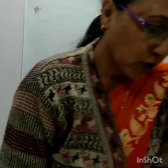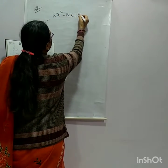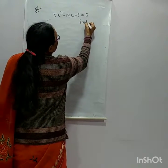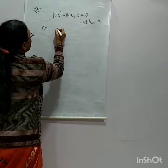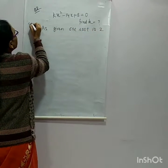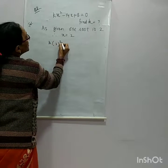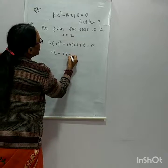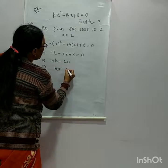Question number 2: Find K for which one root of the quadratic equation KX² - 14X + 8 = 0 is 6. Wait — one root is given as 2. Since one root is 2, X = 2. Put X = 2 into the equation: K(2)² - 14(2) + 8 = 0, giving 4K - 28 + 8 = 0, so 4K = 20, therefore K = 5.